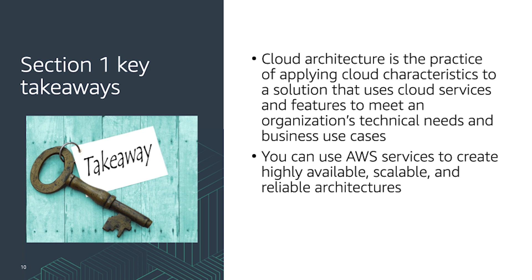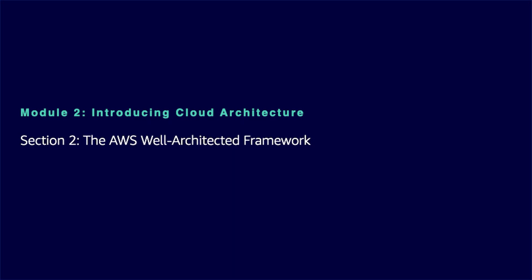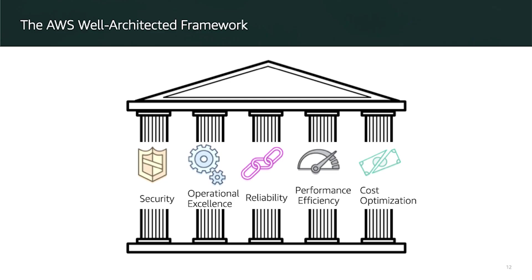The AWS Well-Architected Framework is designed to help you build the most secure, high-performing, resilient, and efficient infrastructure. It provides a consistent approach to evaluate cloud architectures and guidance to help implement designs. It documents a set of foundational questions and best practices that enable you to understand if a specific architecture aligns well with cloud best practices. AWS developed this framework after reviewing thousands of customer architectures on AWS.